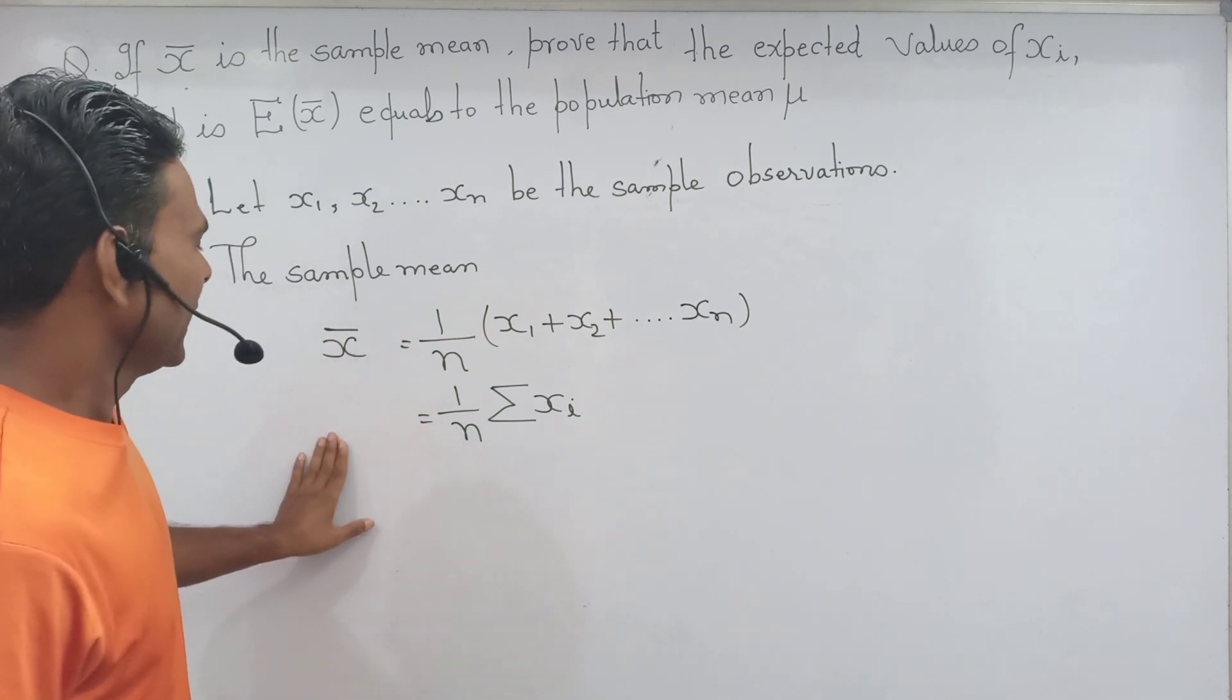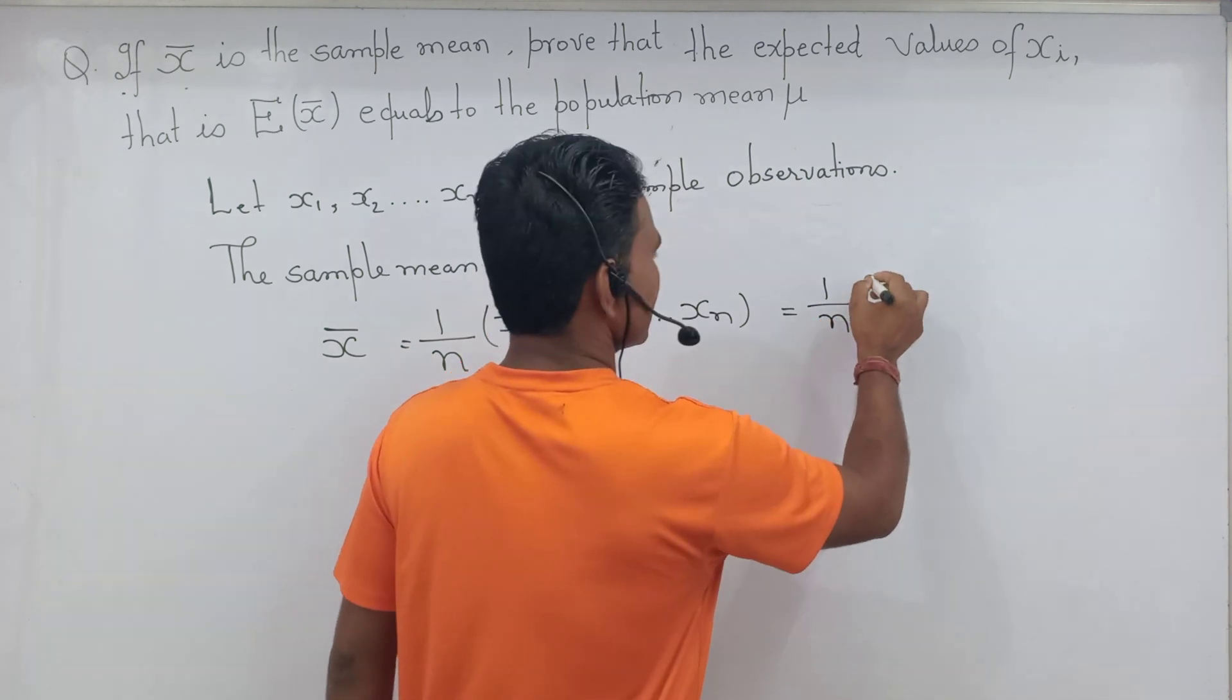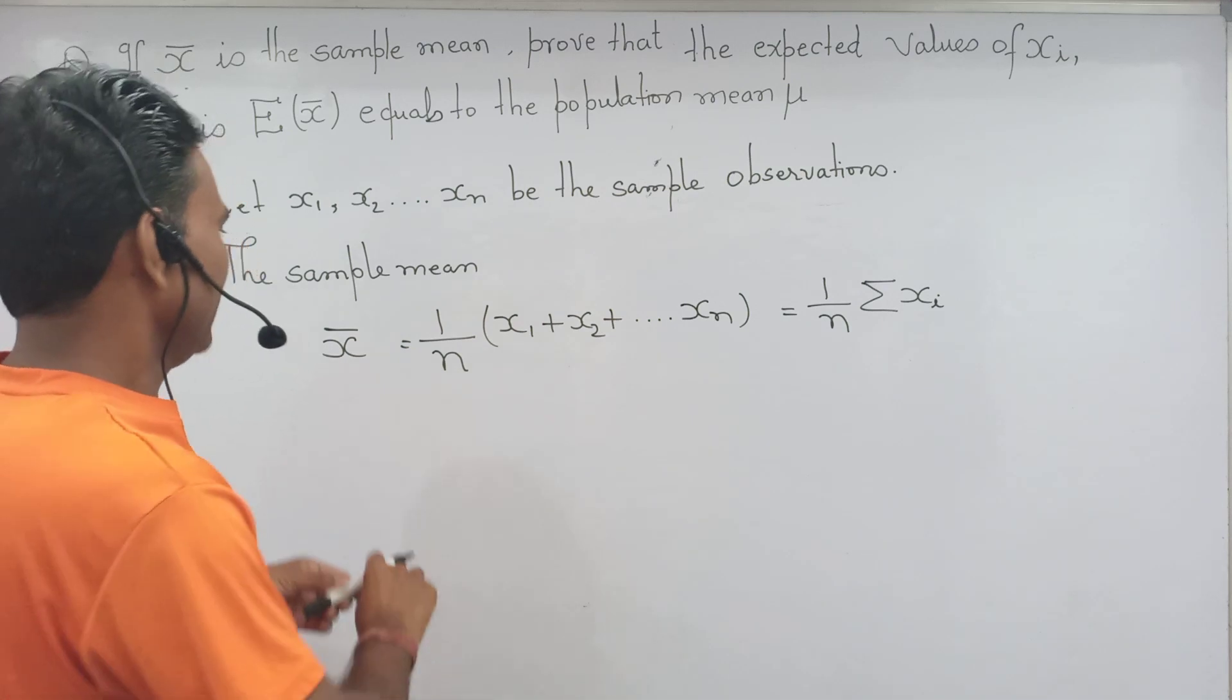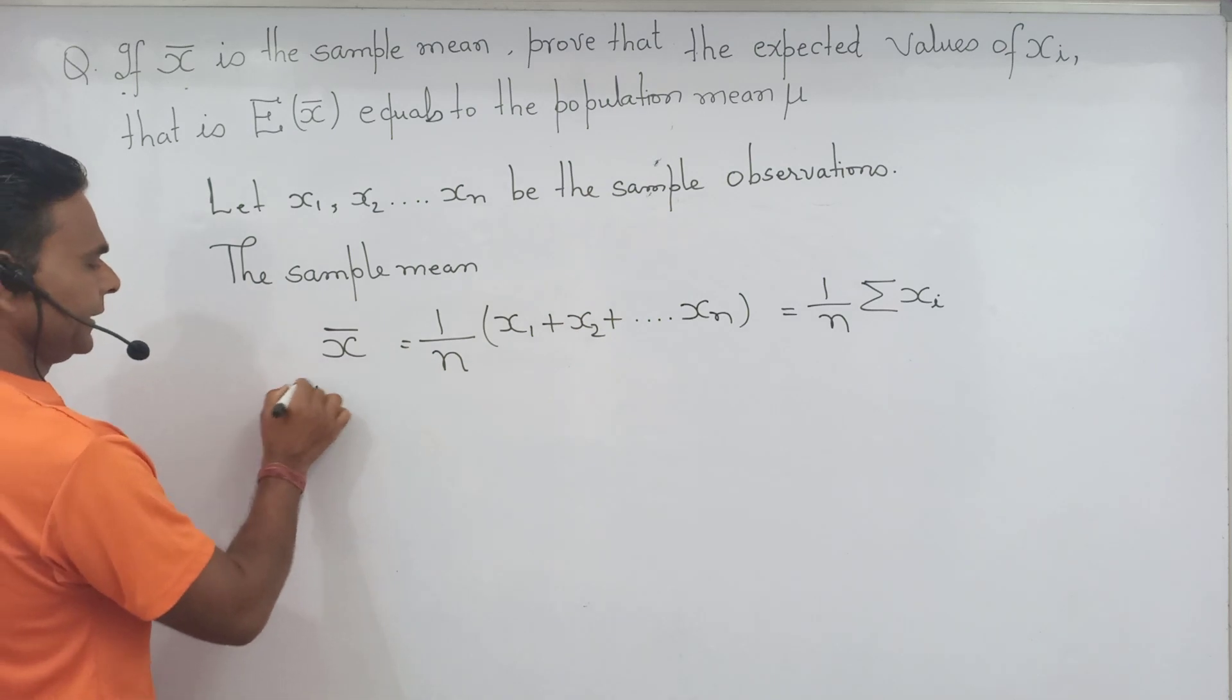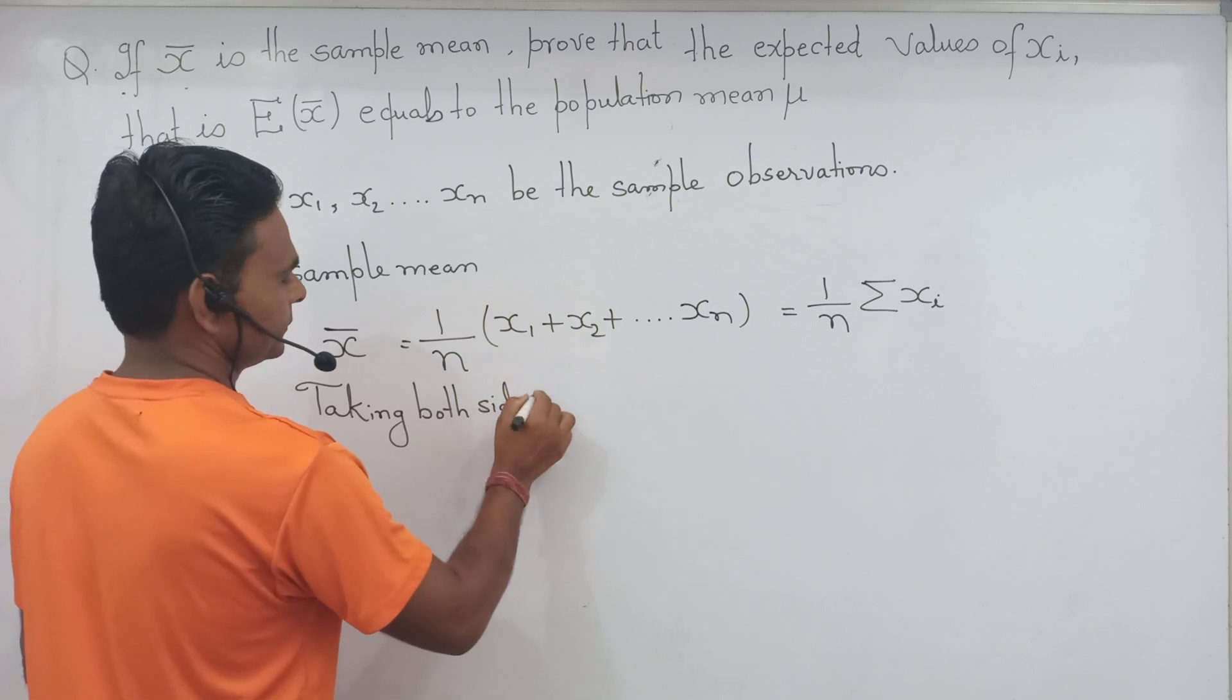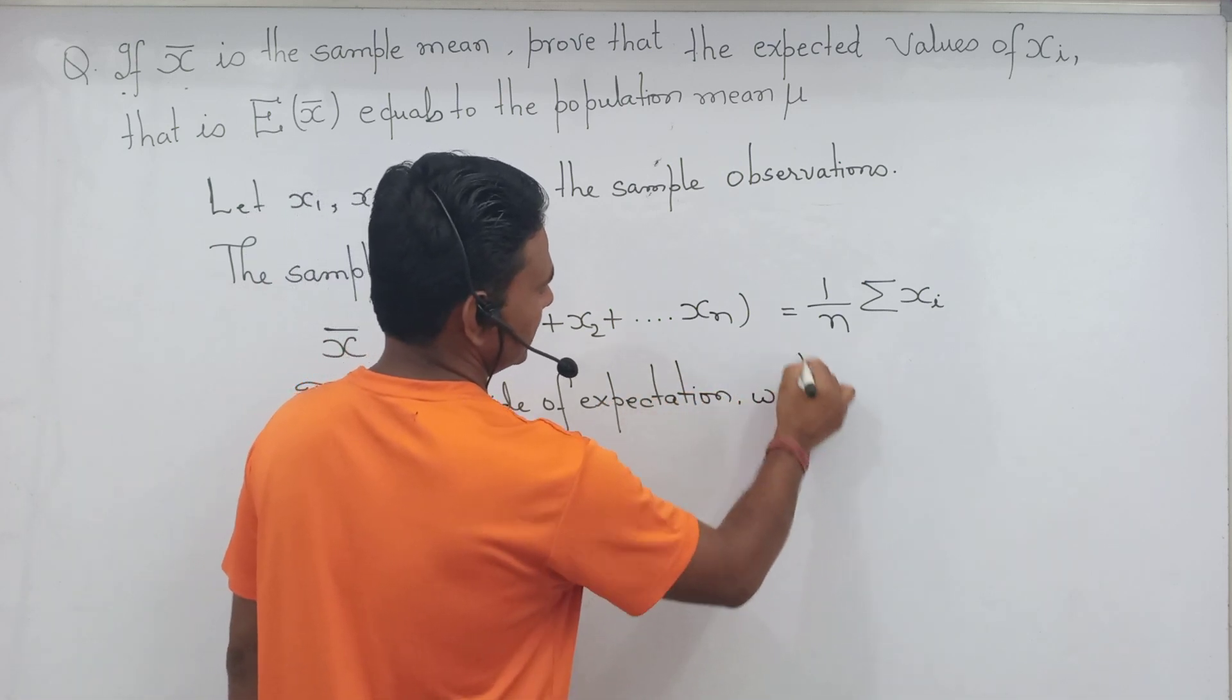Where i equal to one to n. So X̄ equals 1 by n summation of X_i. Now we are going to take both sides of expectations.